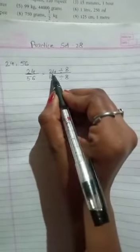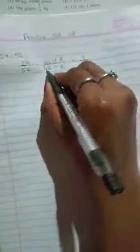24 and 56 can be divided by the number 8. In the 8 table, how many times does it come? 24 comes 3 times: 8 threes are 24, and 8 sevens are 56. So the proportion or ratio is 3 is to 7.